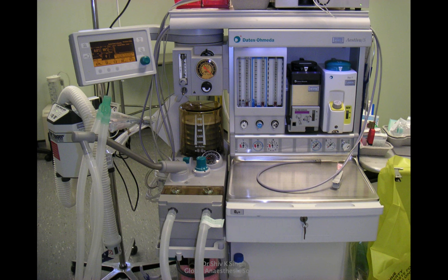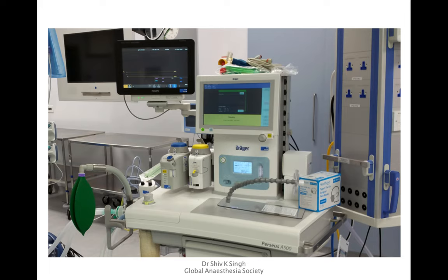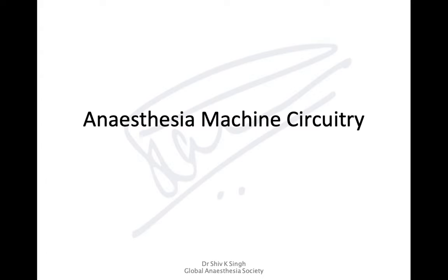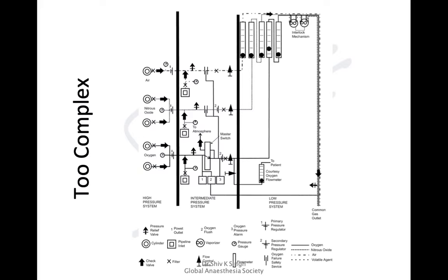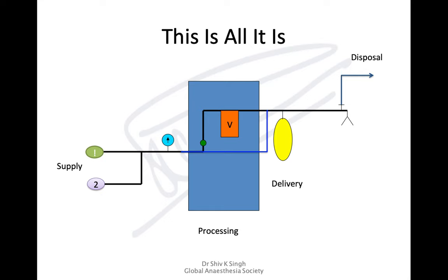The latest machines don't even have the flow meters we had in older machines — a lot of it is electronically controlled and computerized. Anesthesia machine circuitry can be quite complex and difficult to understand, but we're going to simplify it. Any modern anesthesia machine includes the supply, which comes through the pipeline from vacuum insulated evaporators or a bank of cylinders.